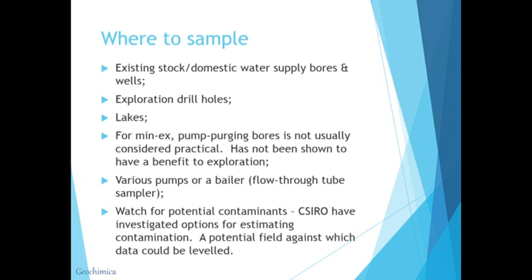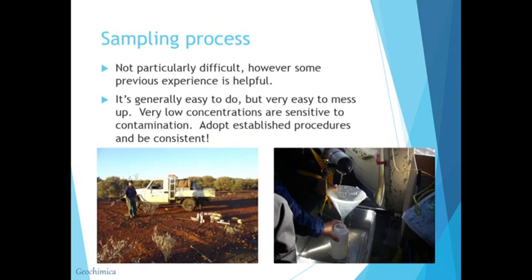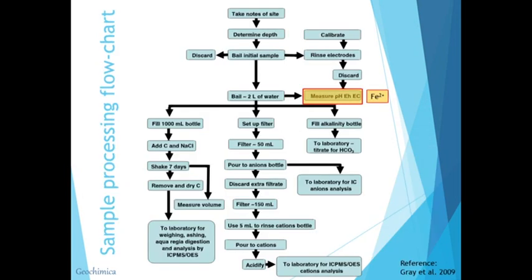You really need to be mindful and watch for potential contaminants. The CSIRO have done some great work investigating options for identifying contamination in groundwater samples, estimating it, and providing a potential field which you could level your data against. The sampling process itself is not particularly difficult, however it does help if you've got some previous experience collecting groundwater samples. It's relatively easy to do but also quite easy to mess up. We're dealing with very low concentrations — gold is measured in parts per trillion type levels — and they're very sensitive to contamination.